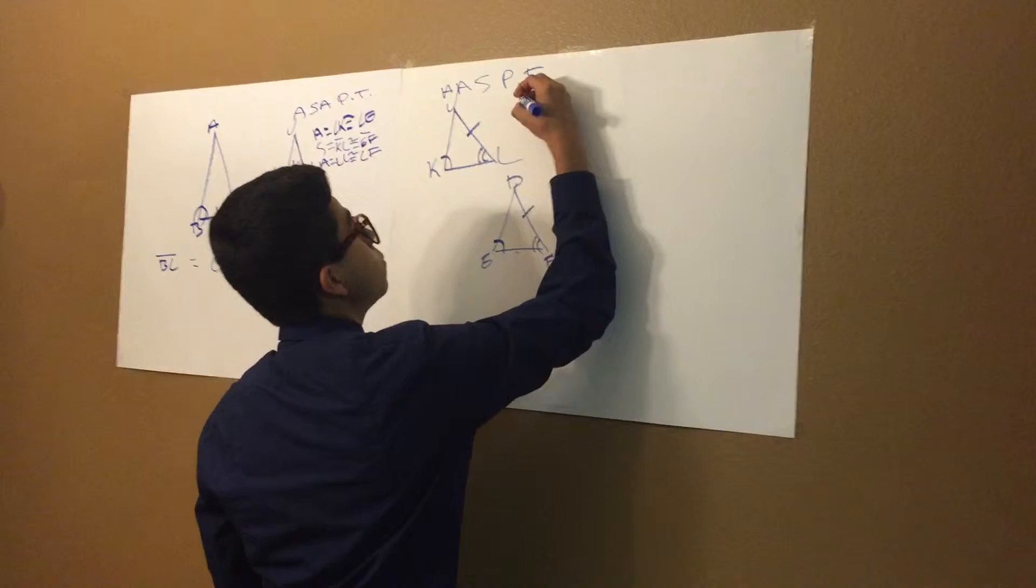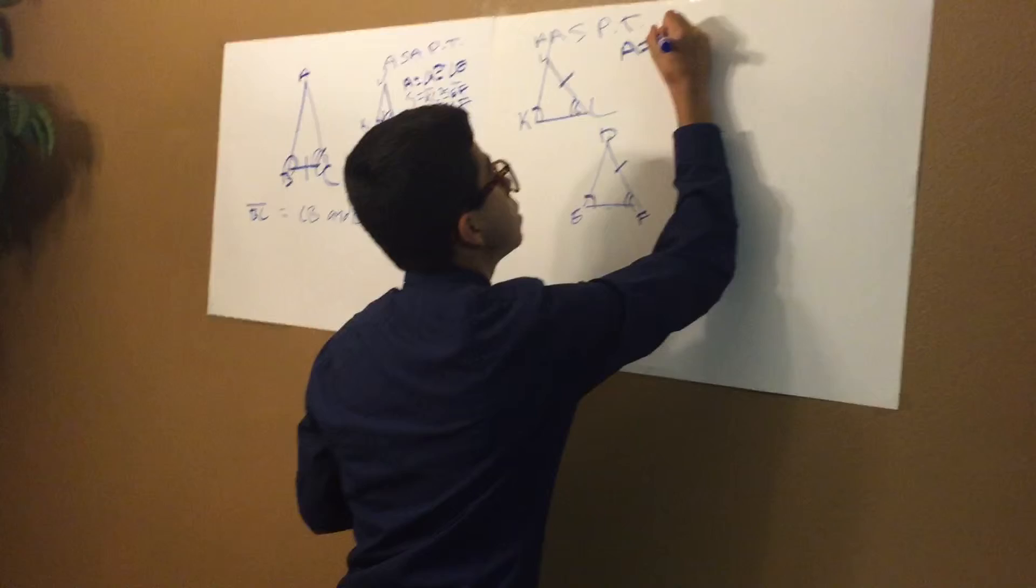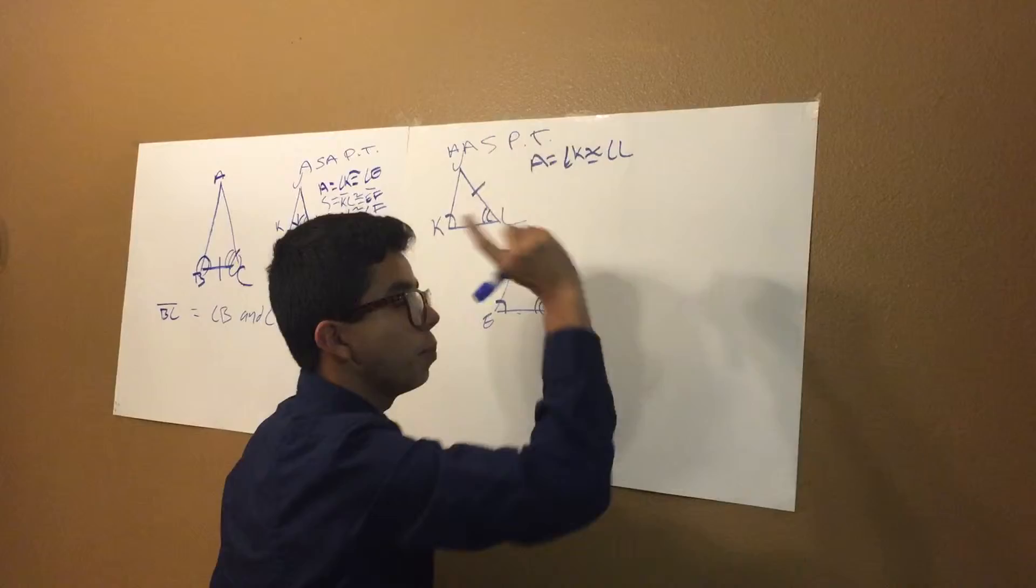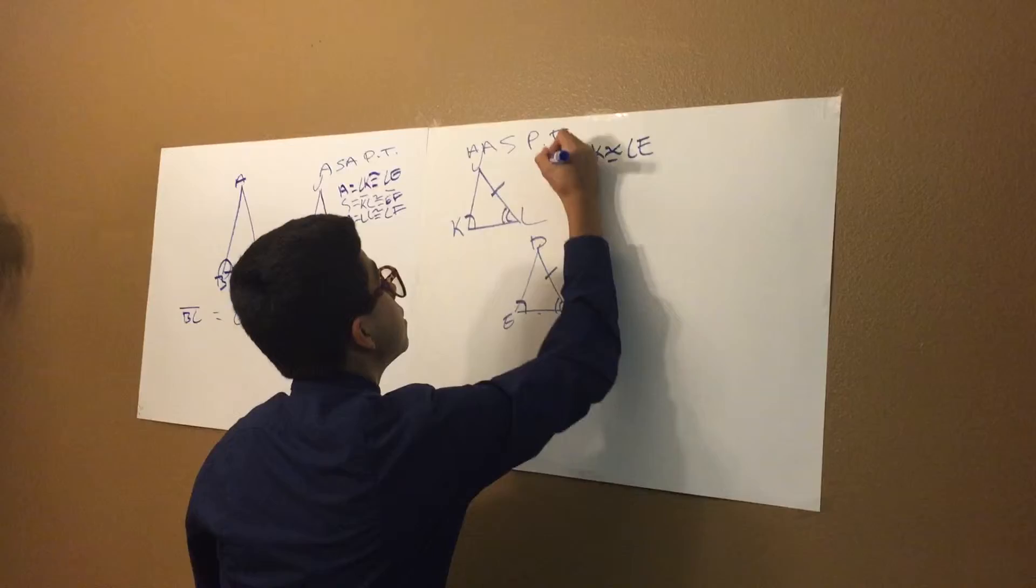So for angle, it's going to be angle K is congruent equal to angle L. No, apologize again. Angle K is congruent equal to angle E. Sorry about that.